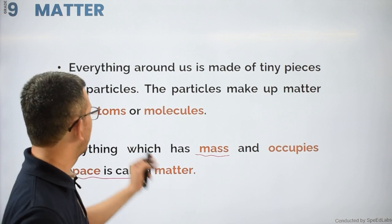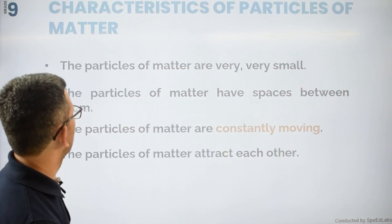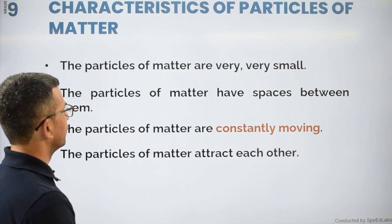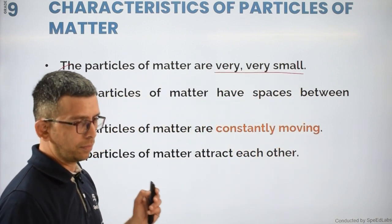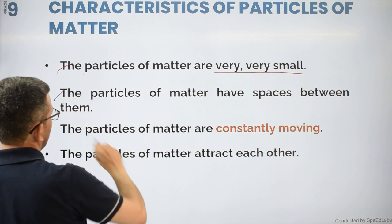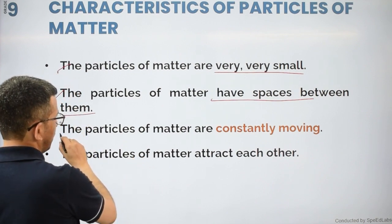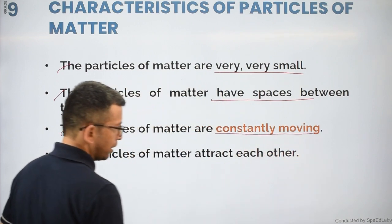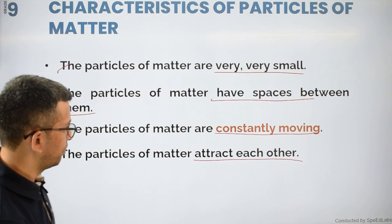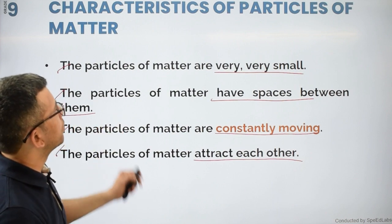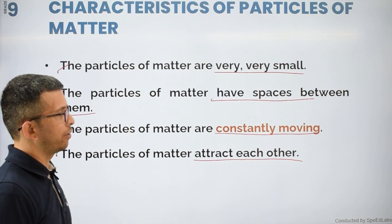Inside matter you will find atoms and molecules. Now let's talk about the four characteristic properties of matter. First, the particles of matter are very very small. Second, the particles of matter have space between them. Third, the particles of matter are constantly moving. Fourth, the particles of matter attract each other.